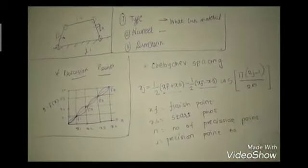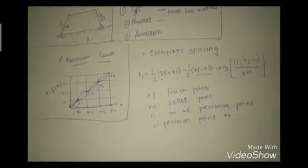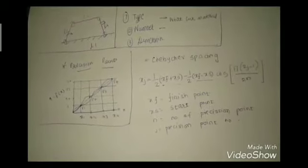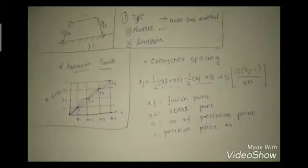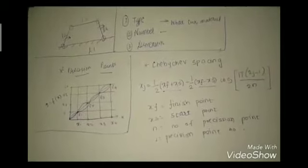An important note: keep your calculator in radian mode because the cosine term inside the formula does not carry a degree symbol. It needs to be in radian mode to get the correct answer for the numerical. Always keep your calculator in radian mode for Chebyshev spacing.